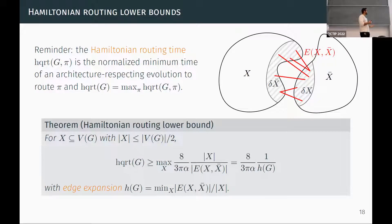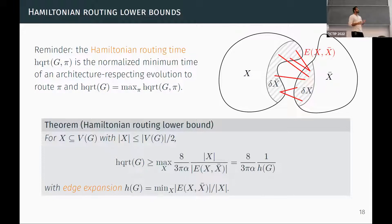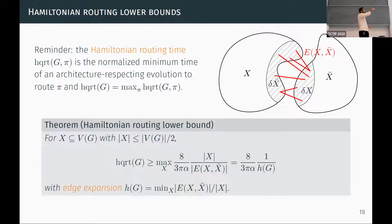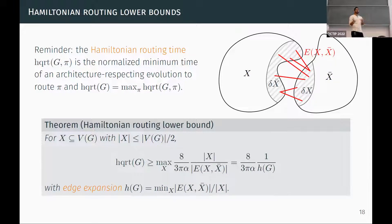We can define a similar lower bound for Hamiltonian-based routing time, following from what's called small incremental entangling. This lower bound is defined not in terms of the vertex boundary but in terms of the edge boundary, because the Hamiltonian is only supported on edges and normalized Hamiltonians can only generate entanglement at a rate proportional to the number of edges. Crucially, the edge-based lower bound is always looser than the vertex-based lower bound, which is a possible area where we might get a speedup from Hamiltonian-based routing over gate-based or swap-based routing.